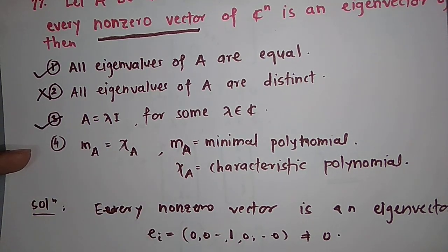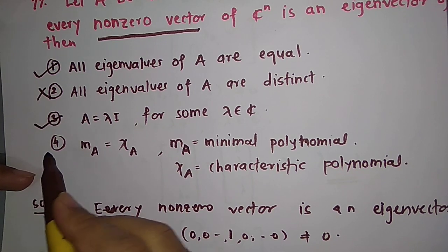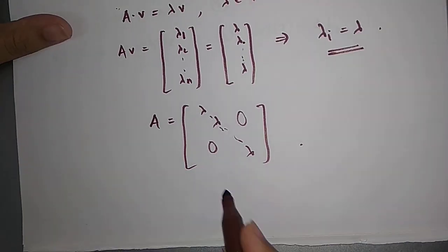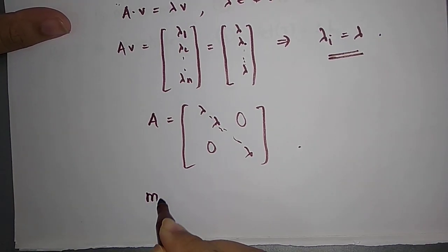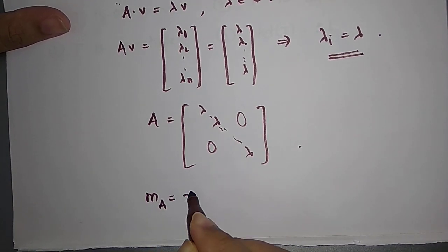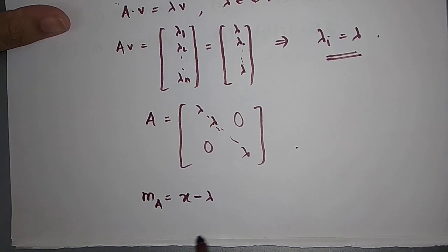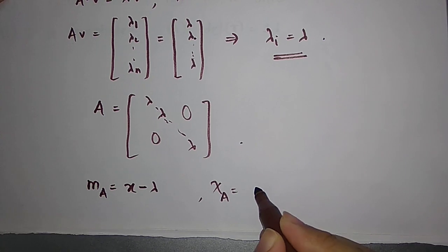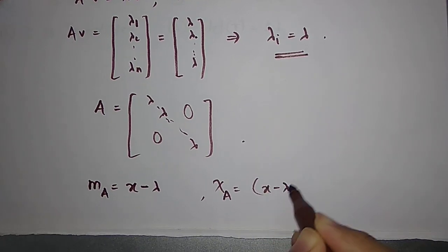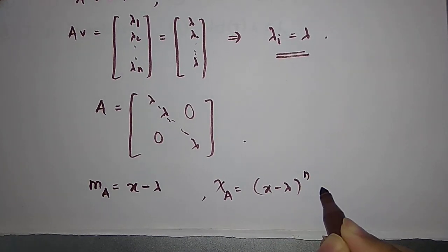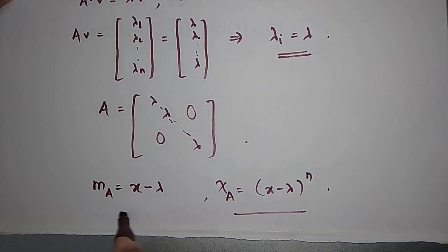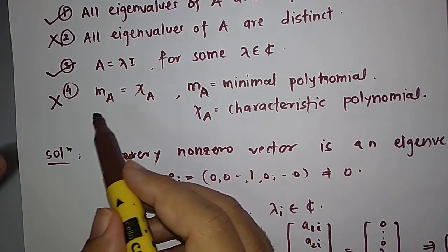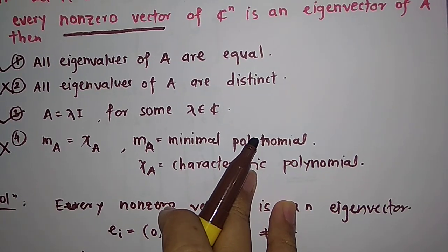And the fourth option will not be correct because what is the minimal polynomial of the scalar matrix? Minimal polynomial of scalar matrix is just x minus λ but the characteristic polynomial of A will be (x minus λ) raised to N. So these two polynomials are not equal. Therefore, the fourth option cannot be correct and that's it for now.